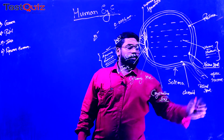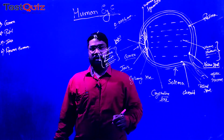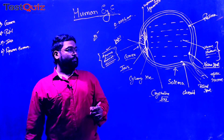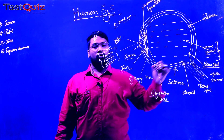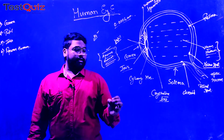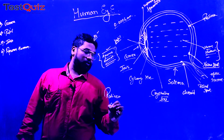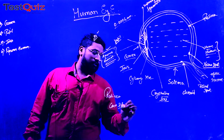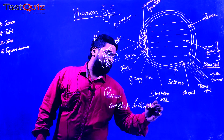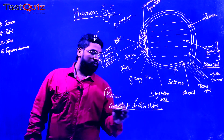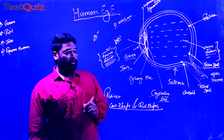We have the yellow spot. Yellow spot is a complete location where we have billions of cone-shaped cells and rod-shaped cells. The complete portion of the retina consists of cone-shaped cells and rod-shaped cells. These cone-shaped cells and rod-shaped cells are completely responsible for the formation of image.